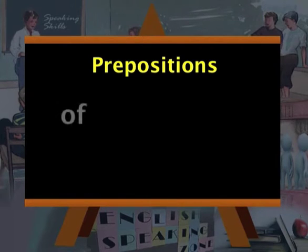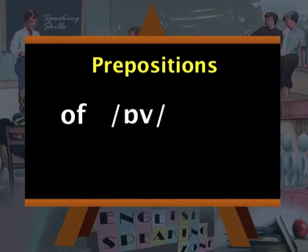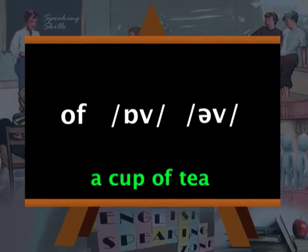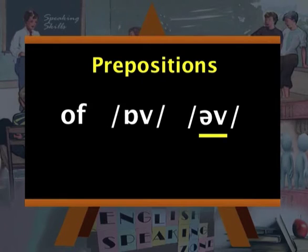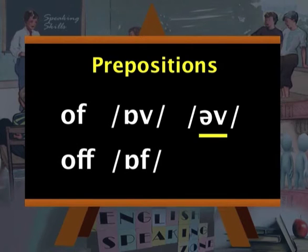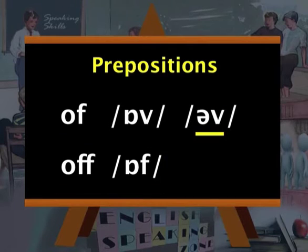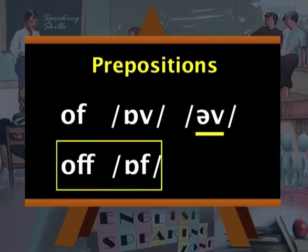Take another very important preposition 'OF' — very commonly mispronounced in English. The strong form is 'OF' but the weak form is 'uv.' We say 'a cup of tea' — not 'a cup OF tea' but 'a cup uv tea,' with 'of' weakened to 'uv.' Remember that both in the strong and weak form there is no 'F' sound — it is a 'V' sound. It is not 'of' with an F; it is 'uv' with a V. If you say 'of' with an F, you are referring to a different word entirely. This applies to other prepositions like 'from,' 'in,' and so on.